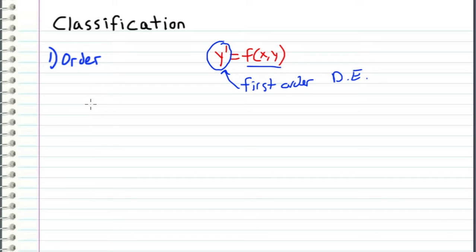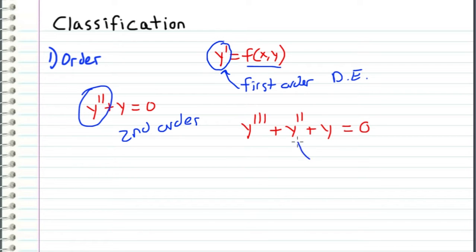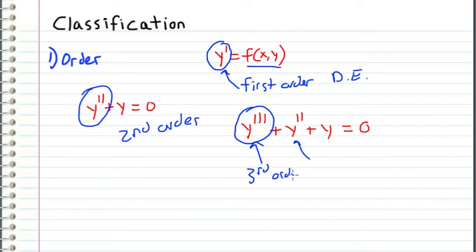For example, if we had this equation and we recognize that we have a second derivative in it, we call this a second order differential equation. What about this? Y triple prime plus y double prime plus y is equal to zero. We have a term with the second derivative of y, but we also have a term that carries the third derivative. We characterize the order of an equation based on its highest order, so we would call this a third order differential equation.